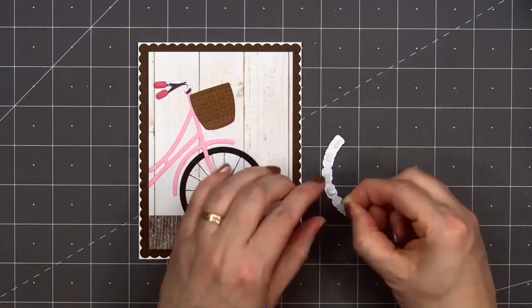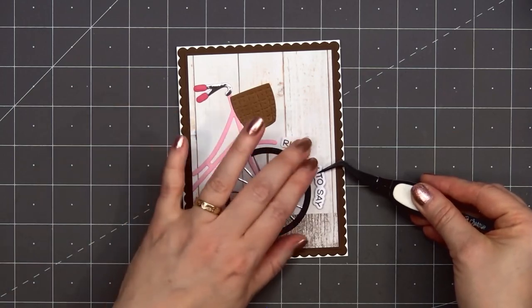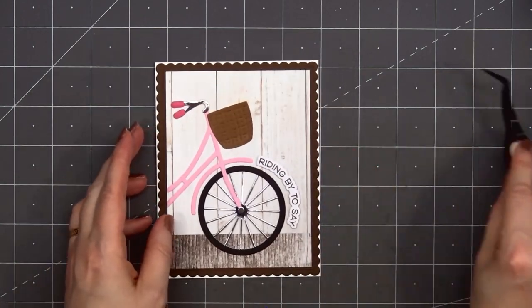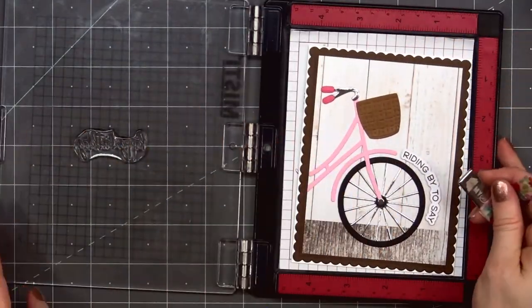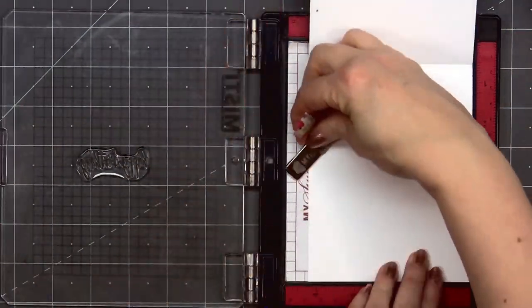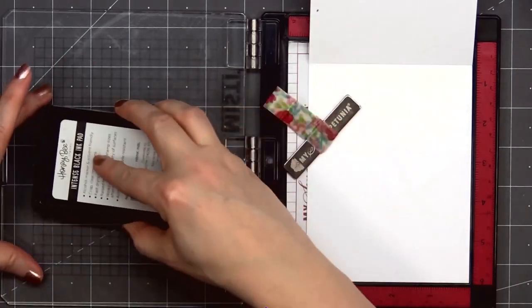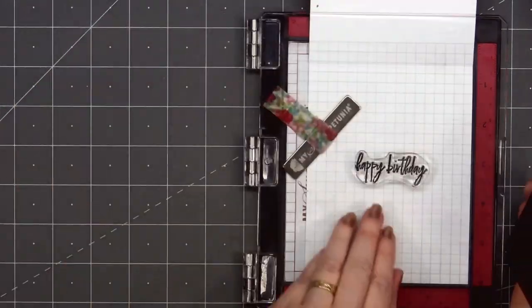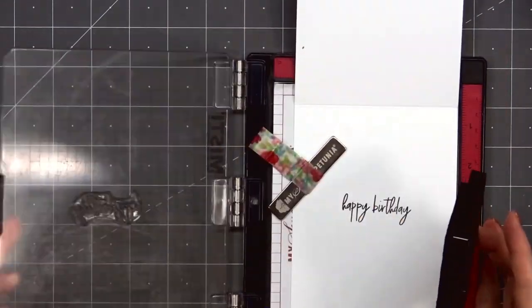For the sentiment I've already stamped it out. This is 'riding by to say' and I'll add the rest of the sentiment on the inside of the card. I decided this would be a birthday card. I'll put my card in my mini MISTI so I can get a nice solid impression when I stamp 'happy birthday'. For ink I'm using Honey Bee Stamps intense black ink. It's my favorite black ink for sentiments.